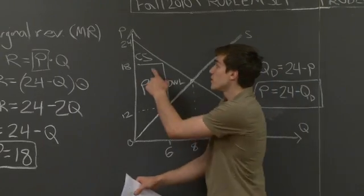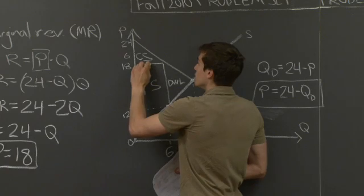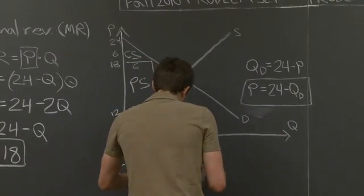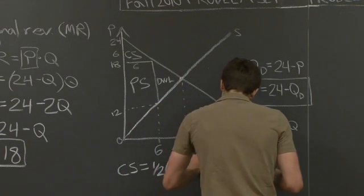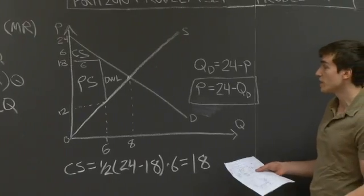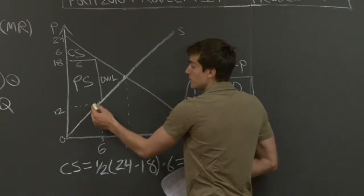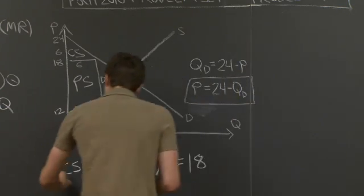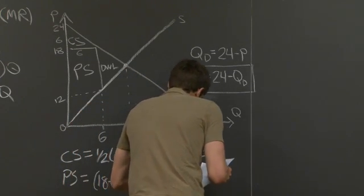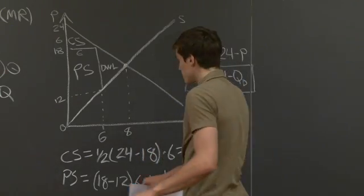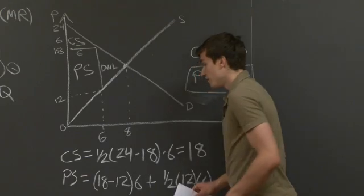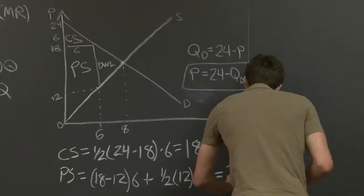To calculate consumer surplus, we take one half times the height times the base of the triangle. Consumer surplus in this situation equals 18. For producer surplus, we add the area of the rectangle to the area of the triangle at the bottom. Adding these together, producer surplus equals 72.